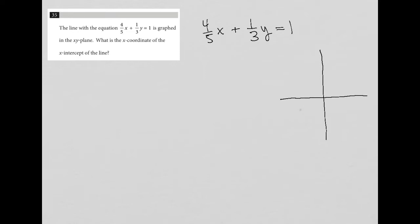What is the x-coordinate of the x-intercept of the line? Okay, so I could definitely graph this if I wanted. There's a few things I could do.